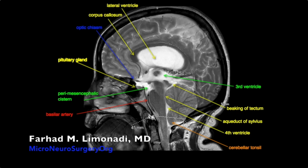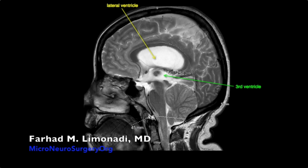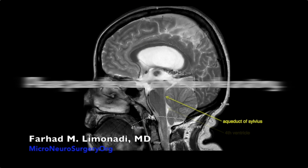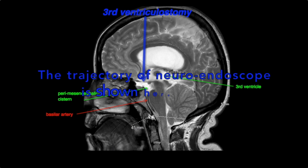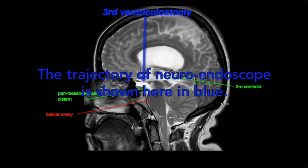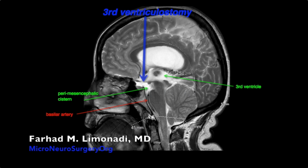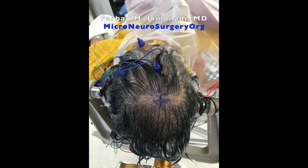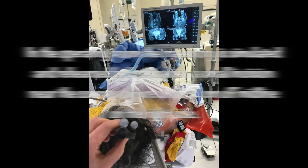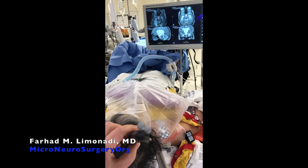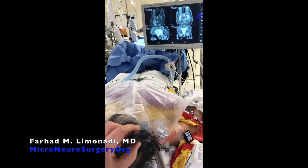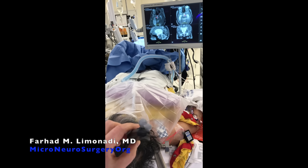Let's review the pertinent anatomy and the trajectory that the endoscope traverses into the brain to achieve third ventriculostomy. In the operating room, the trajectory is simulated and rehearsed before making a small incision near the coronal suture, 1–2 cm off midline on the right side.